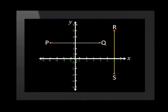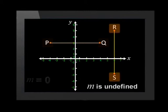Now that we've been reminded how to calculate the gradient, let's have a look at some special cases. It is important to know that the gradient of a horizontal line, such as PQ, is always 0. And the gradient of a vertical line, such as RS, is undefined. Let's see if this is actually true by calculating the gradients of PQ and RS.